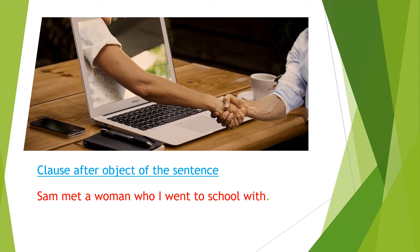Another example: 'He met a woman who I went to school with.' In this sentence the relative clause comes after the object. The object is 'a woman,' and 'who I went to school with' is the relative clause.